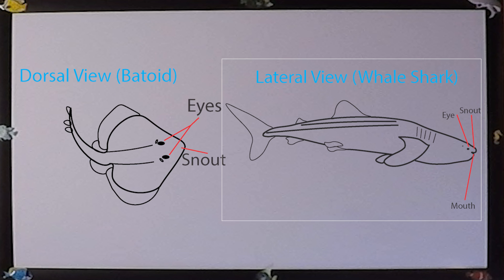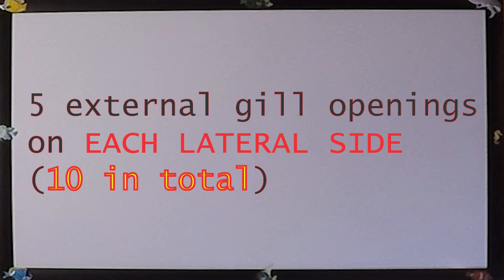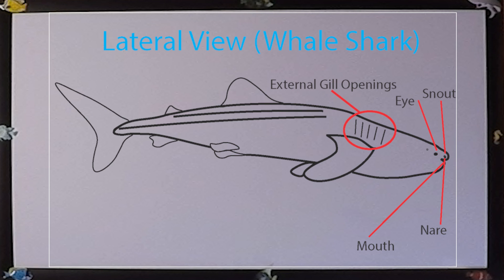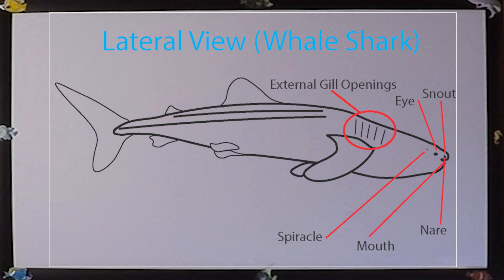The nares are often ventrally seated. Most chondrichthyans have five external gill openings, where water enters through the mouth, over the internal gills, and out those external gills. Some species have six and even seven external gill slits. The spiracles, resembling holes in the head, are thought to be modified external gill openings.